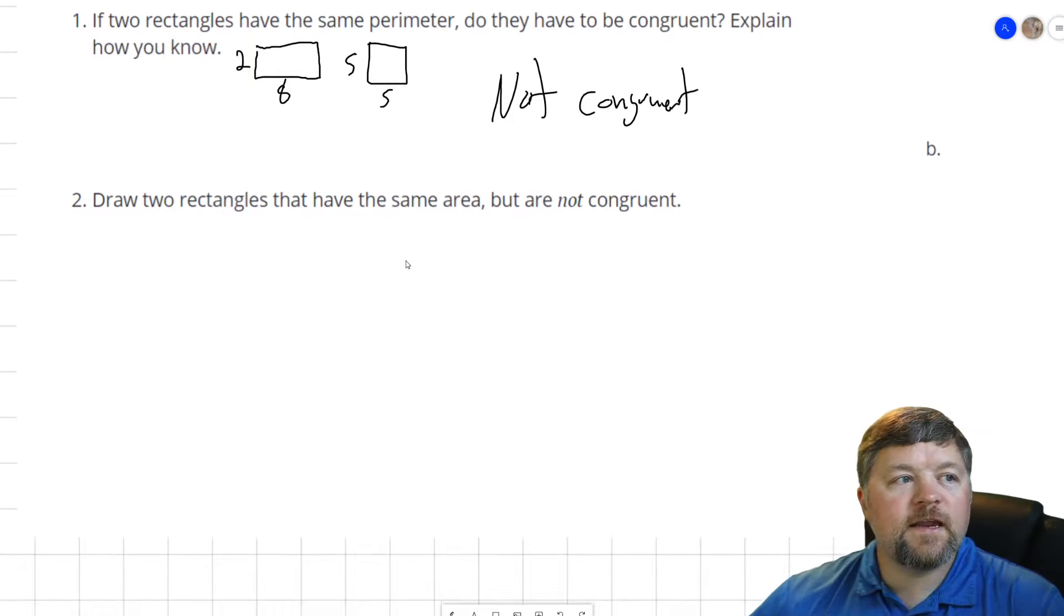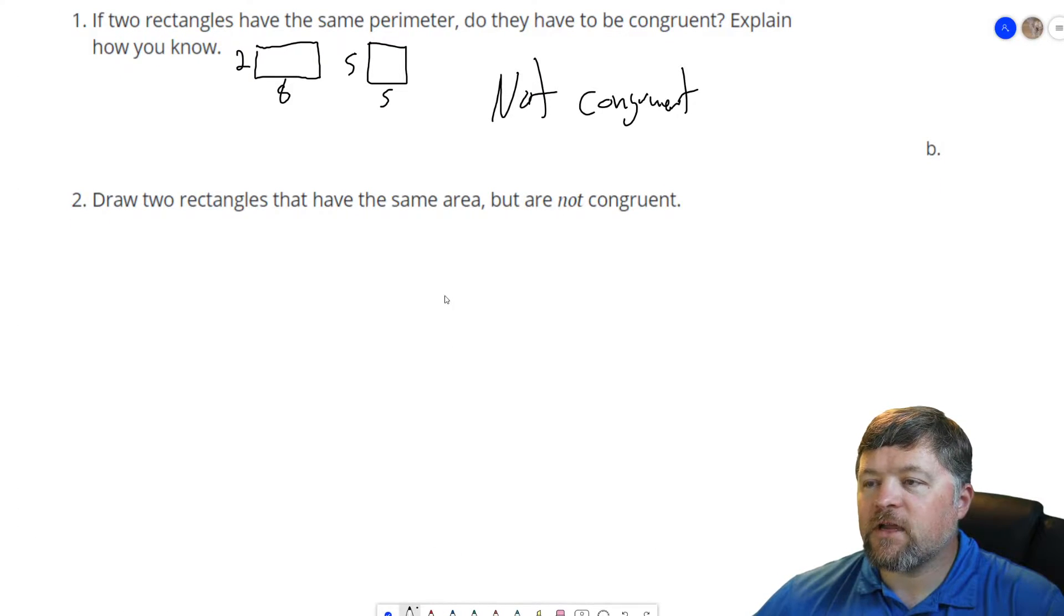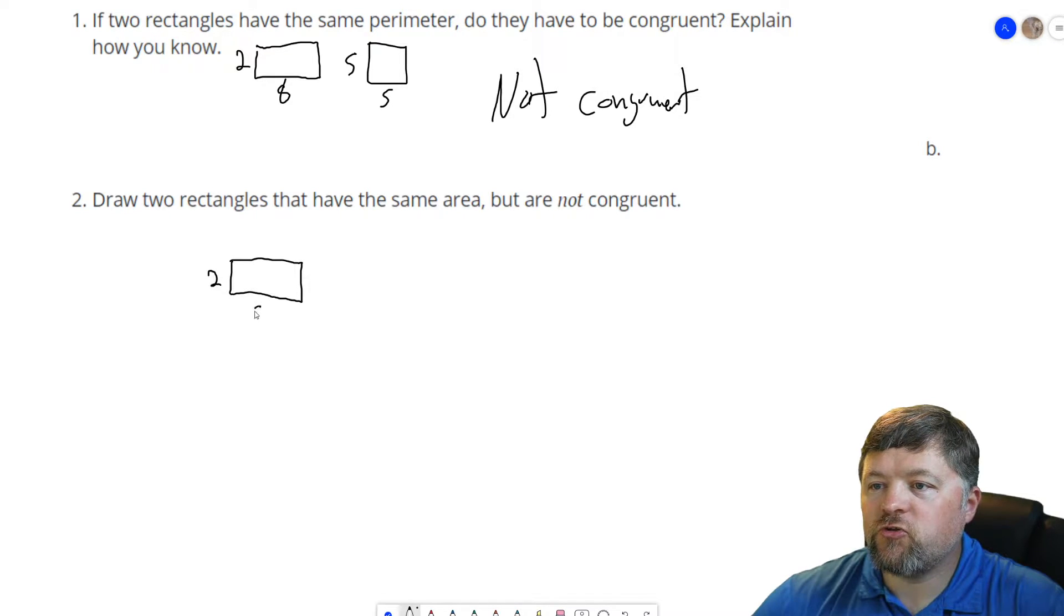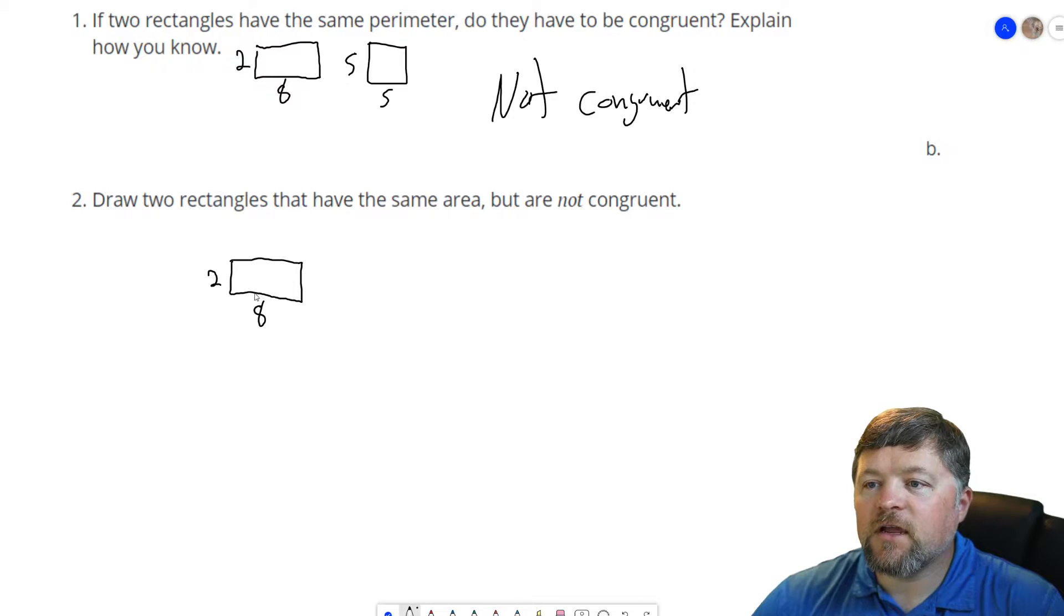Draw two rectangles that have the same area but are not congruent. So if we had a rectangle that was, let's use the same one as last time, that is 2 by 8, that would have an area of 2 times 8 which is 16.